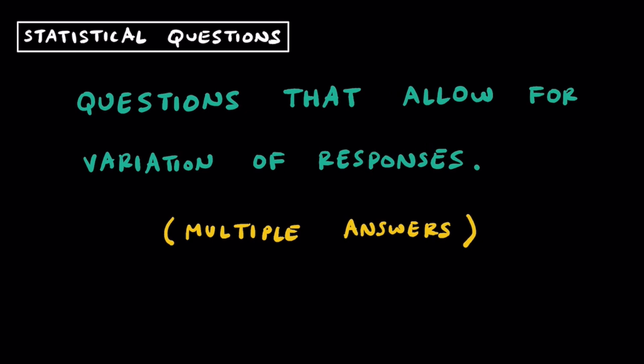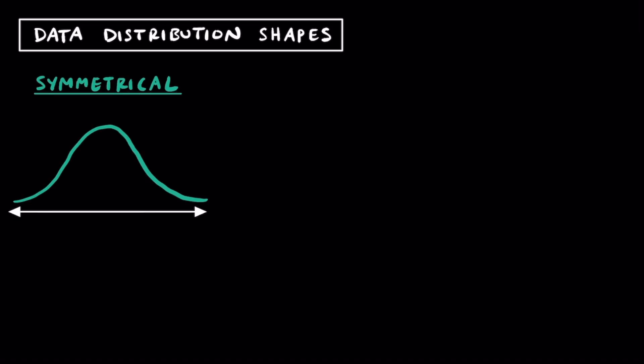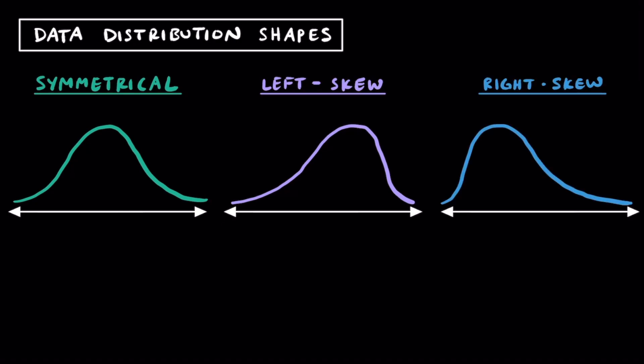Now that we've talked about the difference between statistical and non-statistical questions, let's talk about data distribution shapes. There are three key shapes we're going to focus on today. The first is symmetrical, where most of the data is concentrated in the middle with less and less as we go farther away from it. The second is called left skewed data, where the center is a little more to the right and it's skewed because there's less on the left side. The third shape is called right skewed, where the center is a little more to the left but there's less going along on the right side.